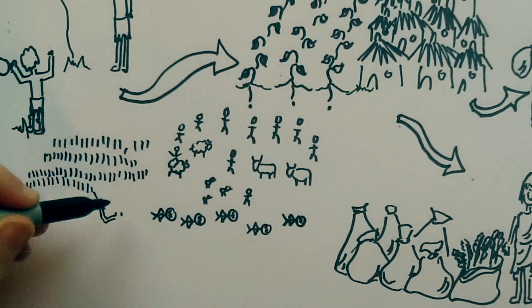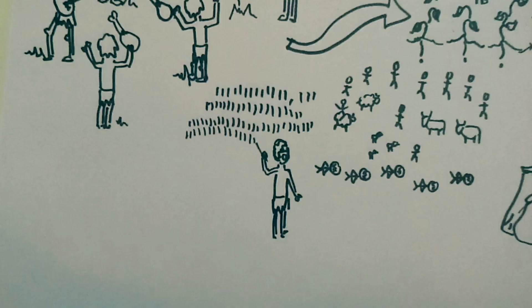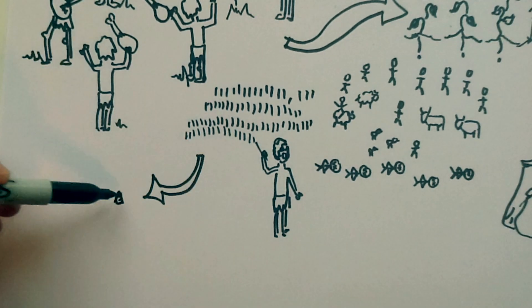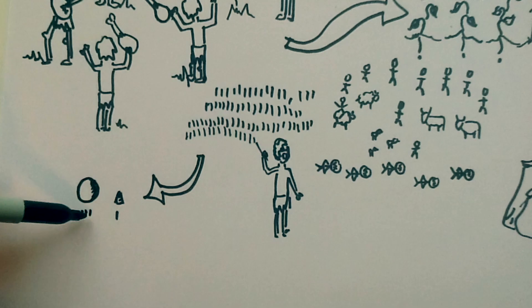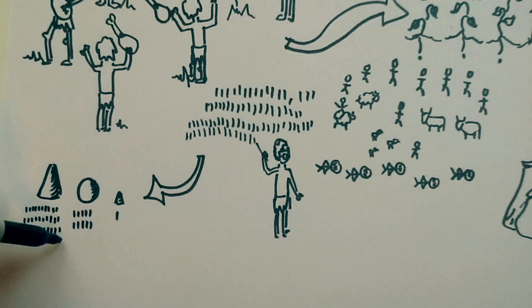But more importantly for maths, our counting lines all got a bit much. So people started using things to represent groups of things. The first civilisation to do this were the Sumerians, who used a small clay cone to represent one thing, a clay ball for 10 things, and a big cone for 60 things.